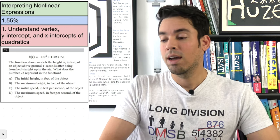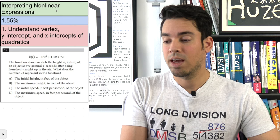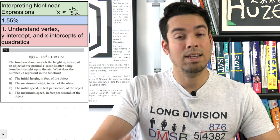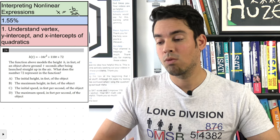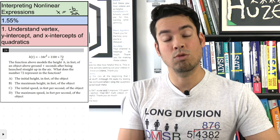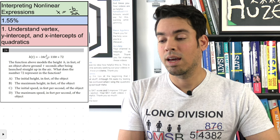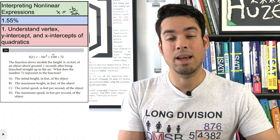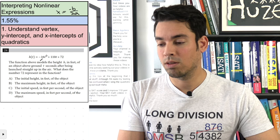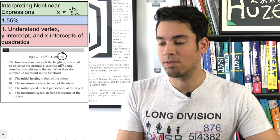We can find the vertex using the formula x = -b over 2a, then plug that in to get the y-value. We can get x-intercepts by factoring. For the y-intercept in standard form, since it occurs when x equals zero, those terms zero out and the y-intercept is just the constant — in this case 72.